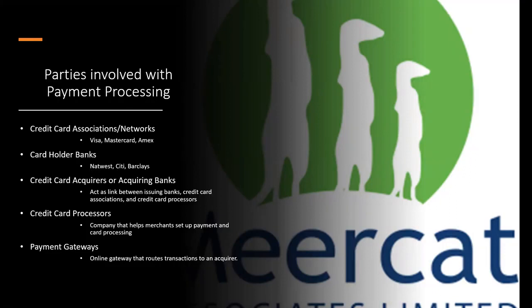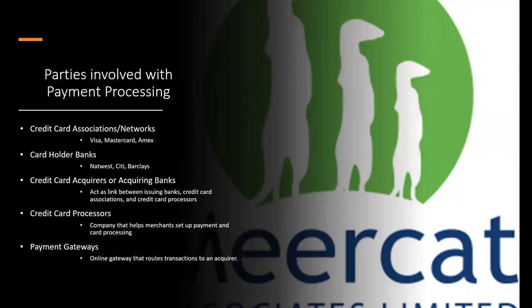The parties involved in processing payments are listed below. First, the credit card associations or networks — the common card types of Visa, MasterCard, American Express, and others like Diners and JCB. Visa and MasterCard are the main networks, and obviously American Express sits slightly on its own, but is widely used by many customers.